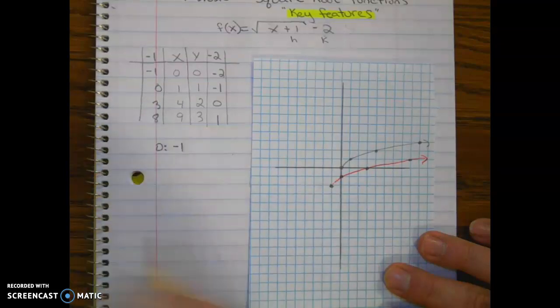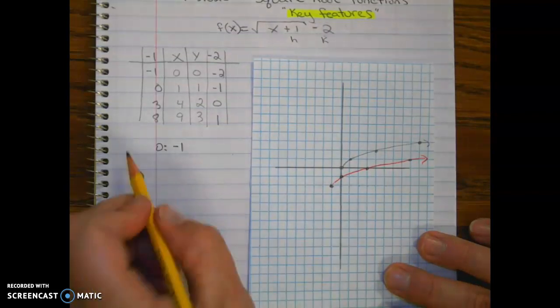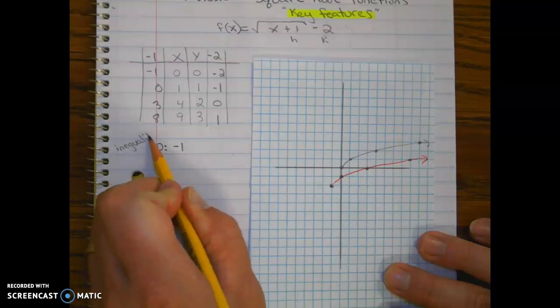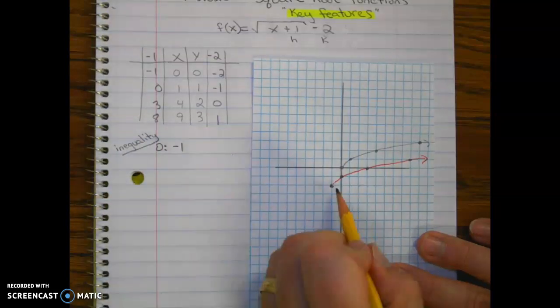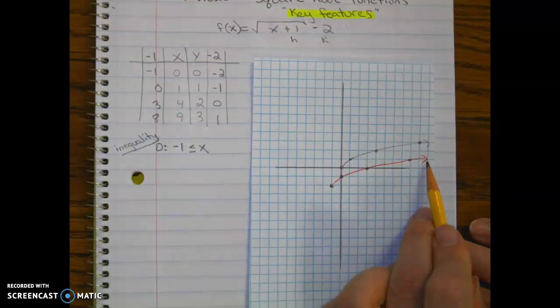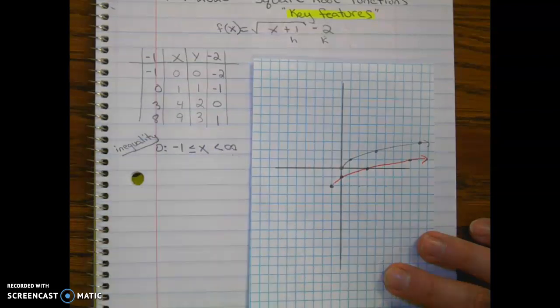I'm going to write it using some different notations. Let's start with inequality, just as a little review. So it's a closed dot, so we're going to have negative one less than or equal to x. And notice the furthest right is an arrow, so that's going to infinity. And infinity never gets an equal.